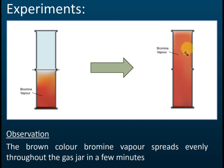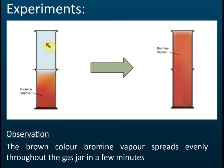After just a few minutes, the upper gas jar is filled with brown-colored bromine gas. This shows that bromine particles have diffused into the upper jar. You need to know the colors: copper sulfate is blue, potassium permanganate is purple, and bromine is reddish-brown — you can also say orange or brown.